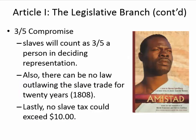The Three-Fifths Compromise settled how much slaves would count toward representation. New Jersey thought they shouldn't count; Virginia thought they should. They reached an agreement that slaves would count as three-fifths of a person. They also agreed there would be no law outlawing the slave trade for 20 years — so in 1808 the slave trade would end. And no slave tax could exceed $10, which was a large sum of money at the time.